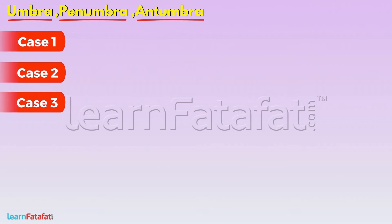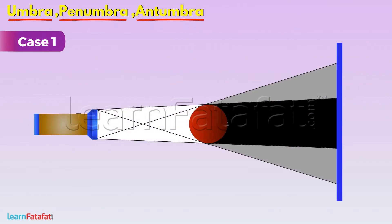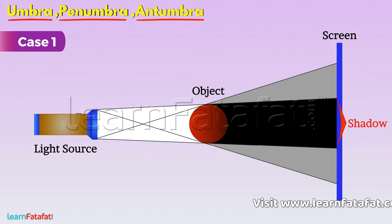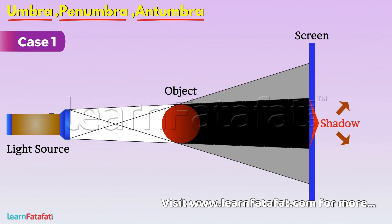Umbra, Penumbra and Antumbra. Let us understand these three concepts with three cases. Case 1. Suppose a light source throwing light on an object produces a shadow of object on the screen.